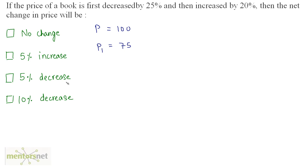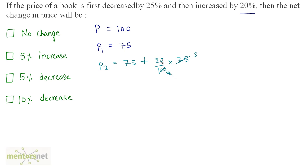So 75 rupees are then increased by 20%. The increased price P2 is equal to 75 plus 20% of 75, which is 20 upon 100 times 75. Computing: 25 times 3 is 75, 25 times 4 is 100, so 20% of 75 is 15. Therefore P2 is 75 plus 15, which equals 90.